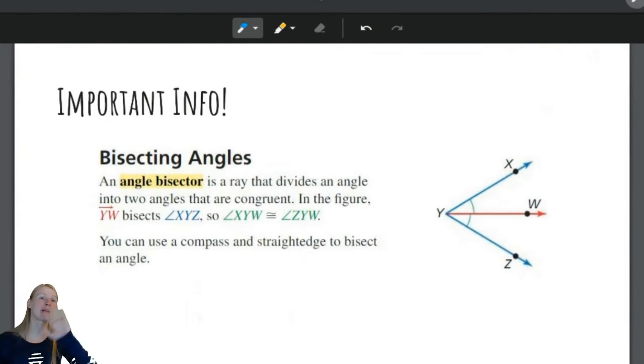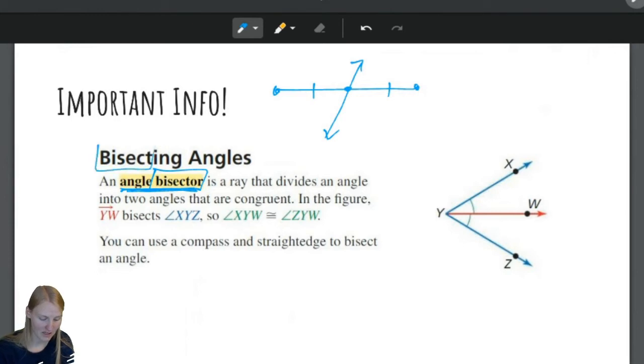So now you know all about the angle addition postulate. Now, it's time to talk about angle bisectors. What was a segment bisector? Well, a segment bisector cut a segment perfectly in half. An angle bisector does the same thing. Any bisector, remember, to bisect something means to cut it in half. So, any time you have a bisector, it's cutting something in half.